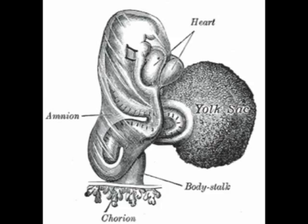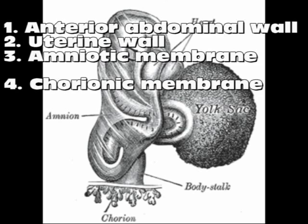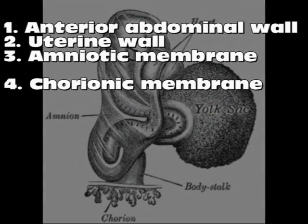In Surah 39:6, we read how Allah creates humans from a single person, sends down eight cattle in pairs, and makes embryos in three veils of darkness. These veils have been interpreted as being the anterior abdominal wall, the uterine wall, and the amniochorionic membrane. I could not find what an amniochorionic membrane is, so I presume it refers to the amniotic sac. If they're talking about the amniotic membrane, they're missing the outer chorionic membrane, which would constitute a fourth veil. So either way is wrong.